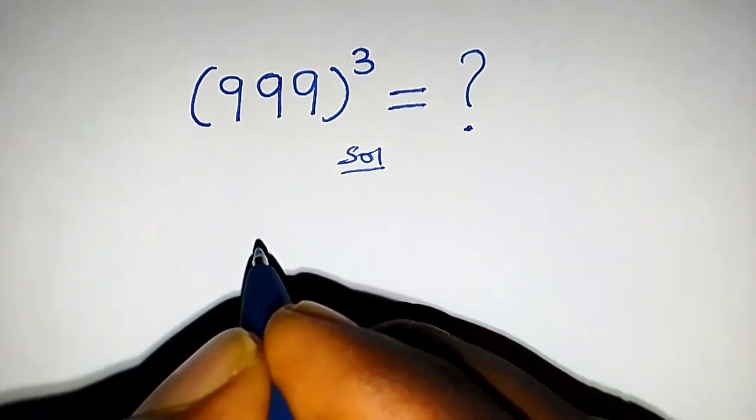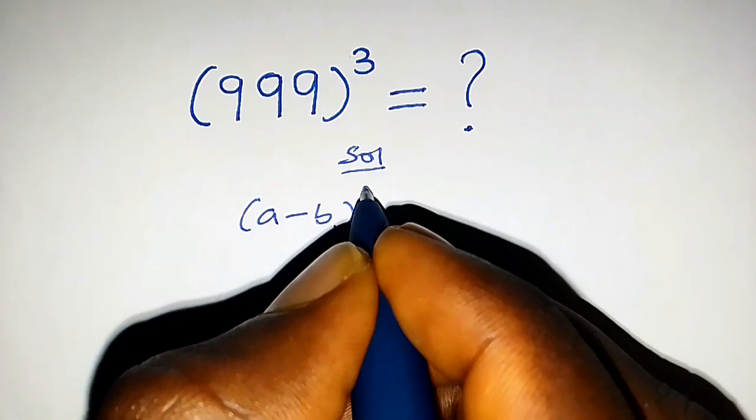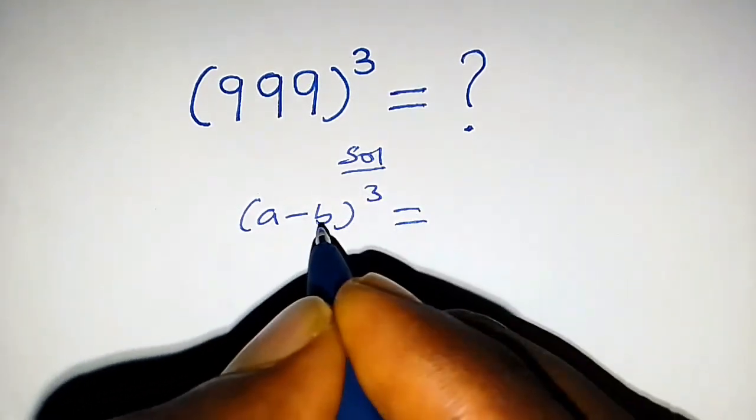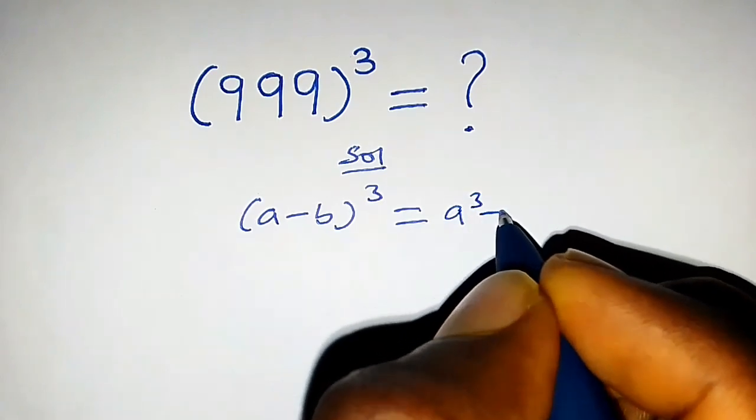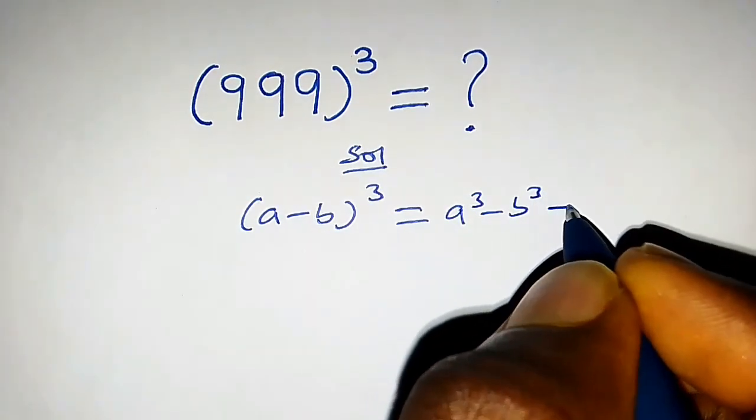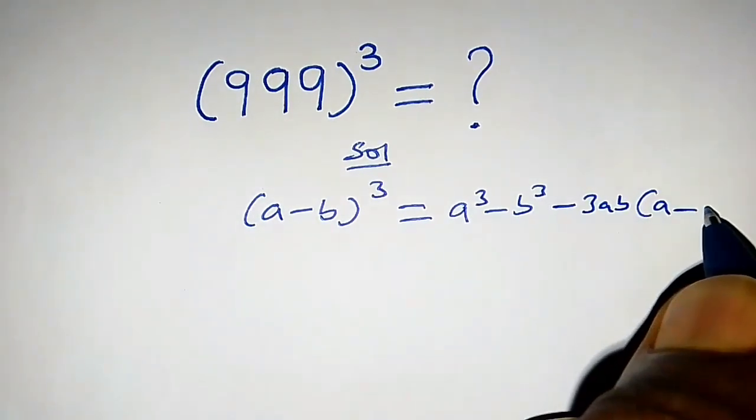Solution. First and foremost, recall that whenever we have a minus b raised to the power 3, if we expand this we are going to obtain a cube minus b cube minus 3ab into a minus b.